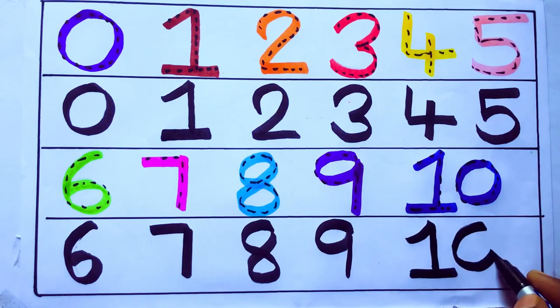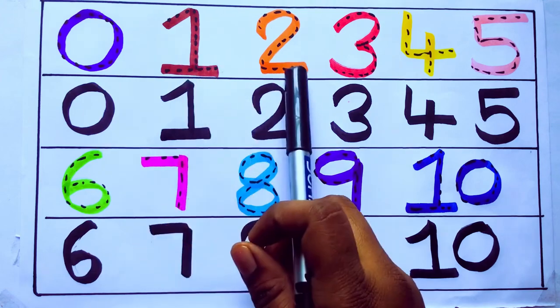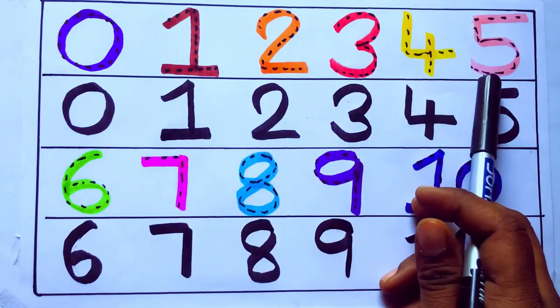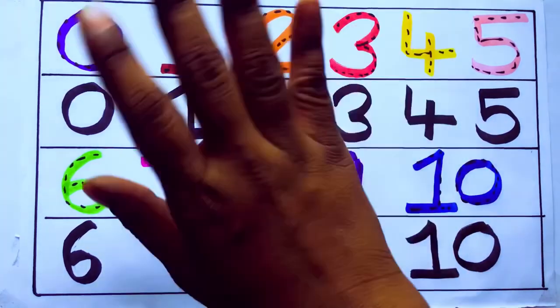Once again, learning numbers: zero, one, two, three, four, five, six, seven, eight, nine, ten. Okay, bye kids.